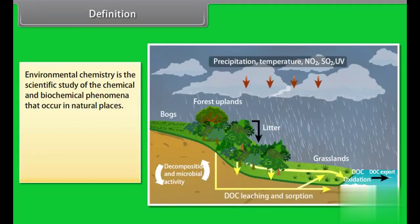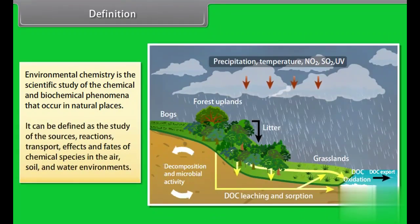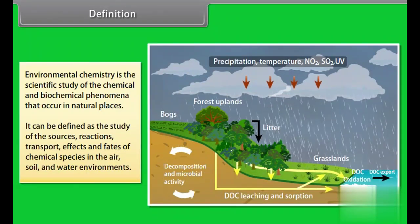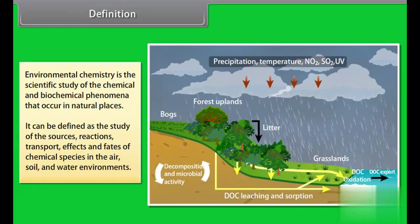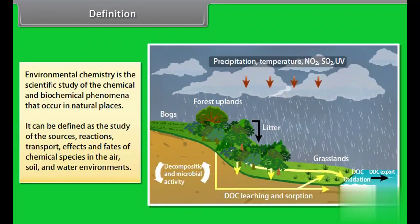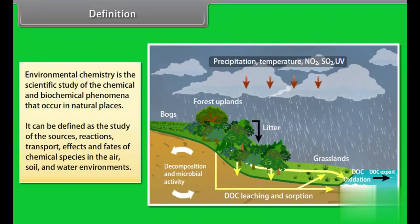Definition. Environmental chemistry is the scientific study of the chemical and biochemical phenomena that occur in natural places. It can be defined as the study of the sources, reactions, transport, effects, and fates of chemical species in the air, soil, and water environments. In environmental chemistry, we identify a pollutant and its interaction with the environment, its bad effects, and find out a way to minimize them.